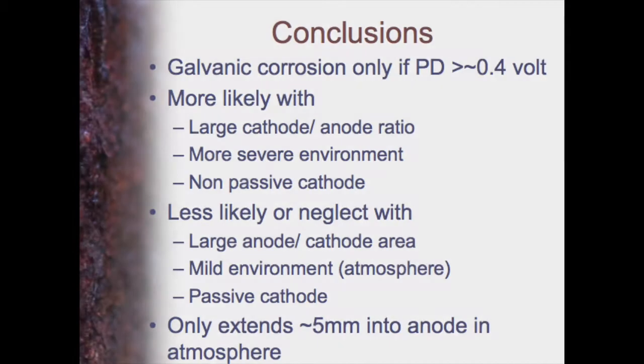Galvanic corrosion is likely only if we have a potential difference of more than about 0.4 volts — textbooks say 0.1 or 0.2, but it needs to be higher than that. It's more likely with a very large cathode-to-anode ratio, in a severe environment, and if the cathode is not passive. It's less likely — or you can forget about it — if you have a large anode, a mild environment, or a passive cathode. In the atmosphere, the actual extent of anodic corrosion is very small — around five millimetres or so. Underwater it can be much further, but in the atmosphere galvanic corrosion is limited to the order of millimetres.